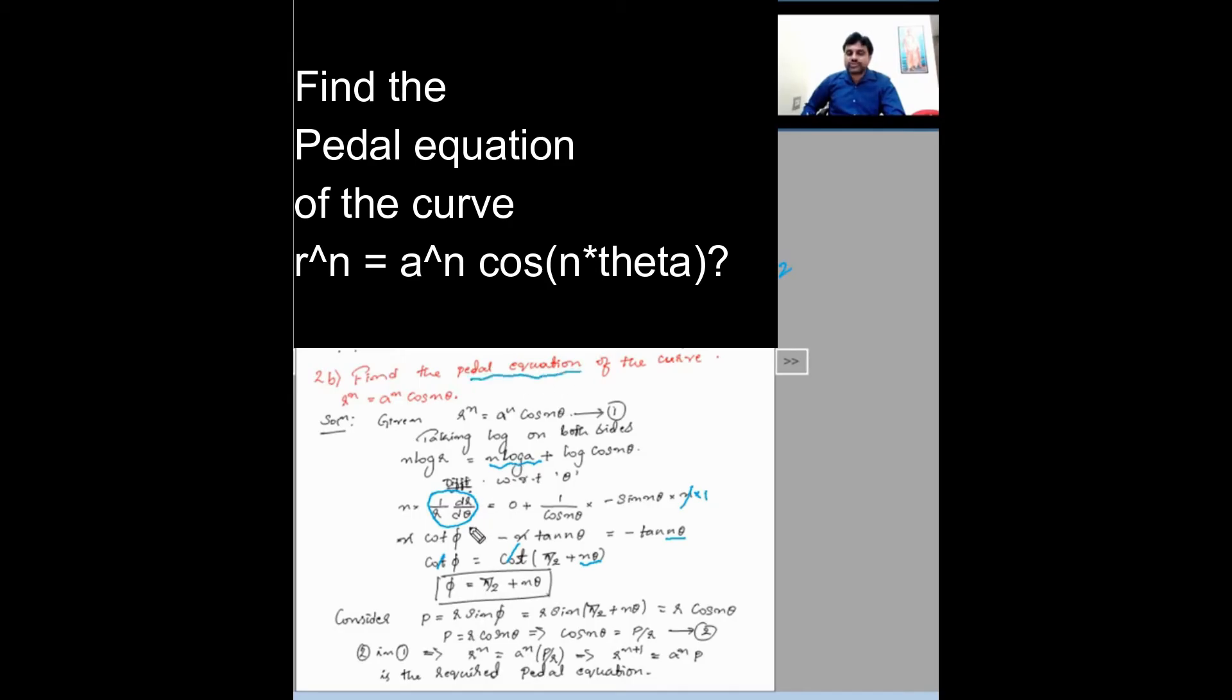So as they have asked for the pedal equation, after finding phi, you should substitute that phi in pedal equation. Pedal equation is nothing but PR equation. So P = r sin phi. This is a standard formula.